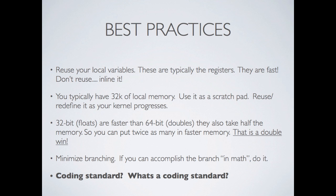Now let's talk about some best practices. Reuse your local variables — they are typically the registers and are fast. Don't rely on inline functions; merge everything together in the function. You can't call subroutines or other objects. You typically have 32KB of local memory — use it as a scratch pad, reuse and redefine it as your kernel progresses. 32-bit floats are faster than 64-bit doubles and take half the memory, so you can fit twice as much in faster memory — a double win. Minimize branching, and if you can handle branching with math by multiplying something by zero, that can often be a very effective technique.